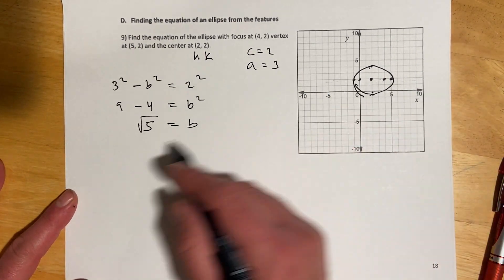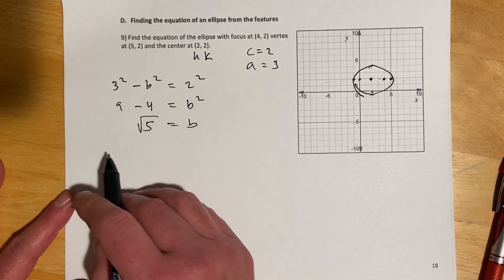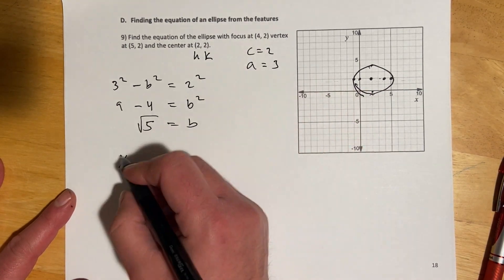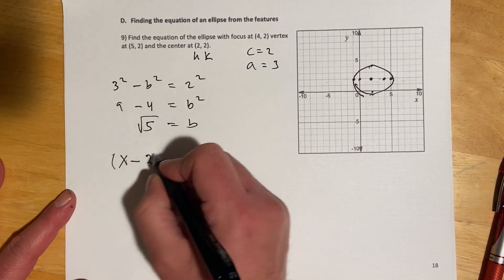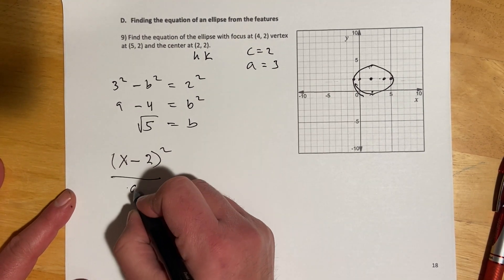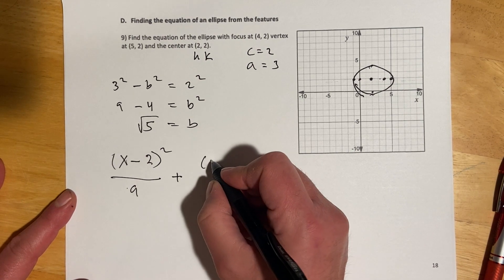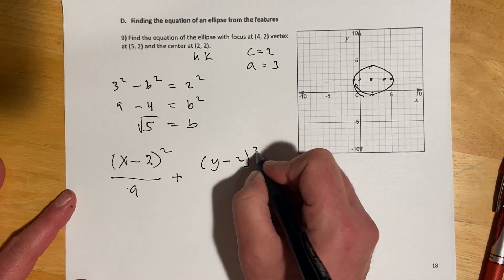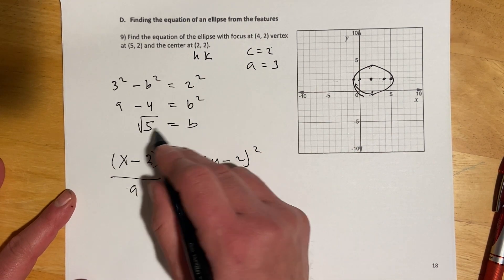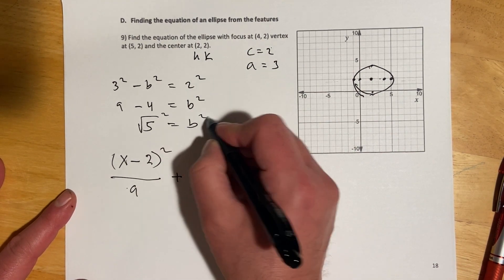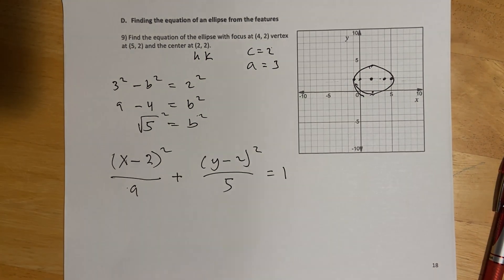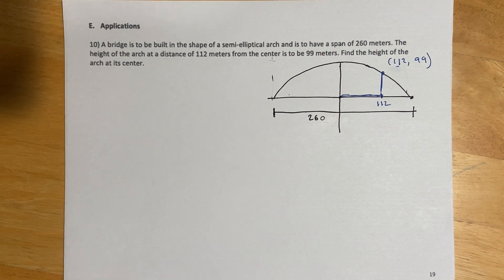And then to get my equation, this one is running parallel to x. So, the a is going to be under the x term. And center was 2, 2. So, x minus 2 squared over 3 squared, or 9. And then y minus 2, as well, squared. And then b. So, b was square root 5. So, squaring both sides, b squared is plain 5. And then that would equal 1.